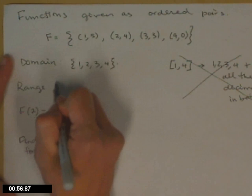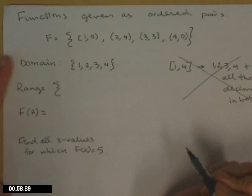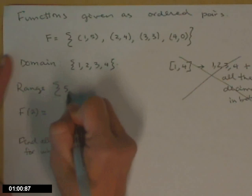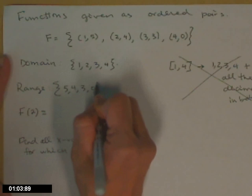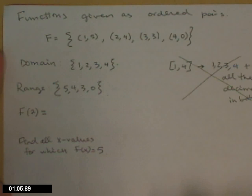We want to instead just list them. So the same thing for our range. We're just going to list all of the y values. So 5, 4, 3, and 0. You can put those in order. It doesn't really matter.